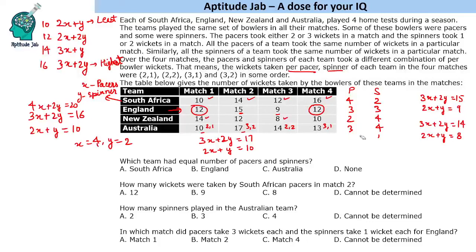Now let us answer the questions. The first question: which team had equal number of pacers and spinners? We can say that England has equal numbers of pacers and spinners — 3 each.